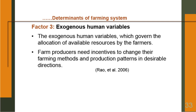Exogenous human variables — Factor 3 — are the human variables which govern the allocation of upper-level resources by the farmers. Farm producers need incentives to change their farming methods and production patterns in desirable directions.